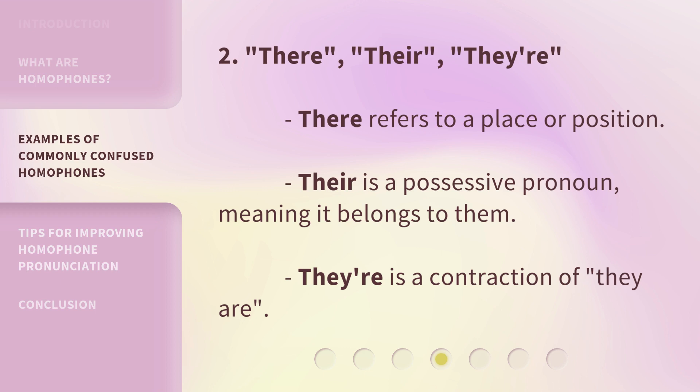Two: 'there' refers to a place or position. 'Their' is a possessive pronoun, meaning it belongs to them. 'They're' is a contraction of 'they are'.